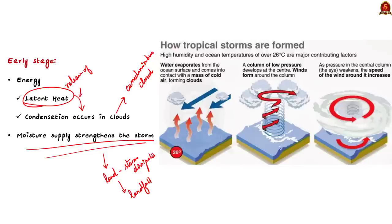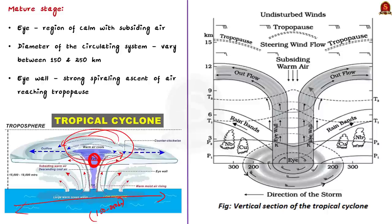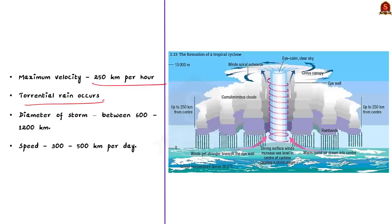A mature tropical cyclone is characterized by strong spirally circulating wind around the center, which is called the eye. The diameter of the circulating system can vary between 150 and 250 kilometers. The eye is the region where it will be calm with subsiding air. Around the eye, there is the eye wall, where there is a strong spirally ascent of air to great heights reaching the tropopause. The wind reaches maximum velocity in the eye wall region — it may reach as high as 250 km per hour, and torrential rains occur here. From the eye wall, rain bands radiate and rows of cumulus and cumulonimbus clouds drift into the outer region, expanding the diameter of the storm.